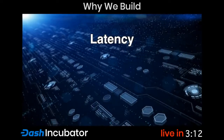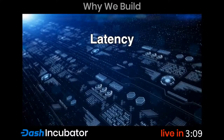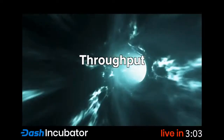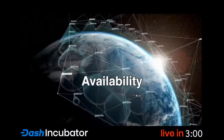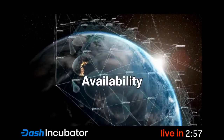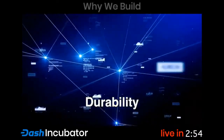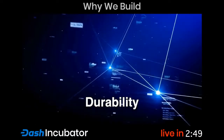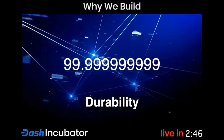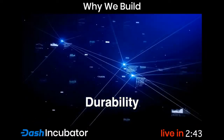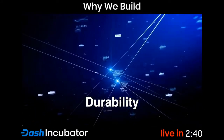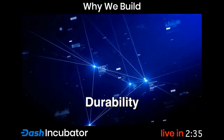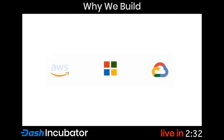To retain and attract customers, cloud providers seek to excel in several attributes: latency — the time between a user request and server response, mostly influenced by geographical proximity; throughput — the amount of data handled at a given time, influenced by bandwidth; uptime — the percent of time the cloud functions correctly; and durability — the probability that stored data is retrievable, measured in nines. To improve durability, data is sharded — pieces are sent to various locations so that even if some are lost, the content can be reconstructed.